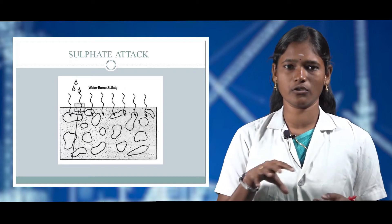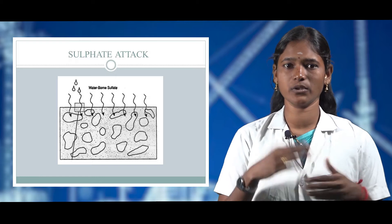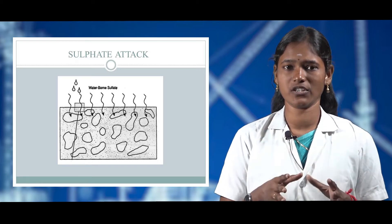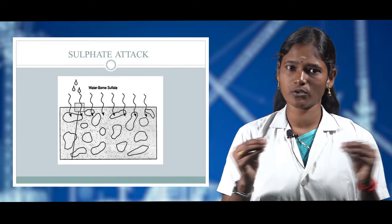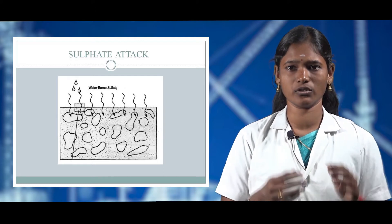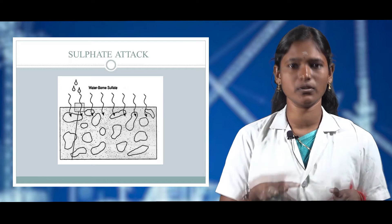In sulfate attack, waterborne sulfates accumulate inside the voids of the concrete. These sulfates react with the silica present in the concrete and affect the foundation, creating compression or tension and micro-cracks. As sulfate ingress continues, cracks develop, causing delamination of the foundation. The reaction involves sulfate ions mixing with cement constituents to form gypsum and ettringite, which accumulate and cause further micro-cracking and delamination.